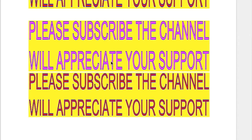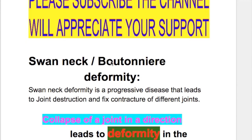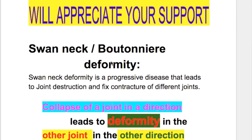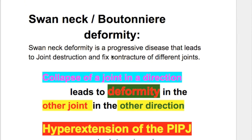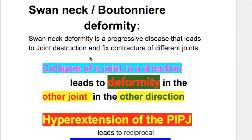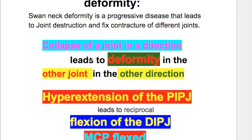In this video we'll discuss swan neck deformity and compare it with the boutonniere deformity. Swan neck deformity is a progressive disease that leads to joint destruction and fixed contracture of different joints.